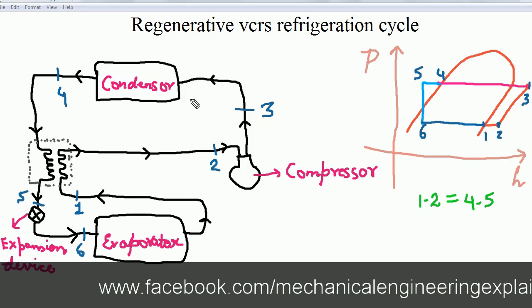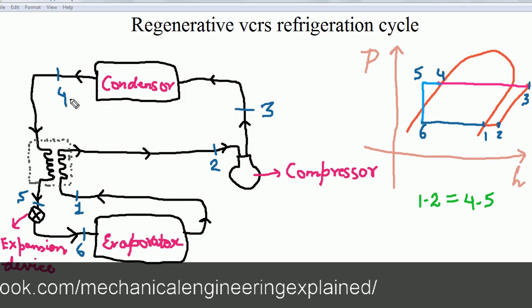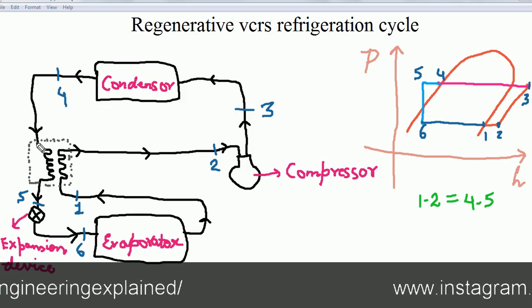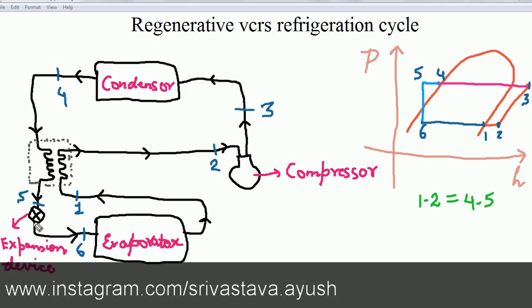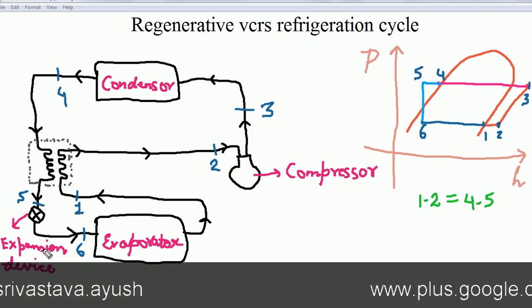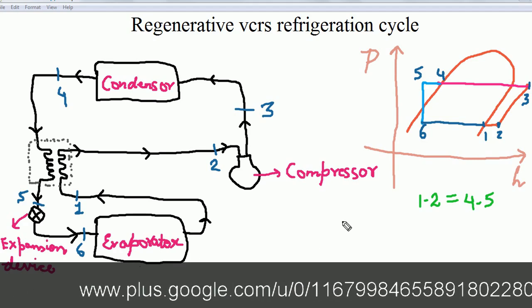the heat is rejected to the atmosphere in the condenser. From 4 to 5, the heat is rejected in the regenerator. From 5 to 6, the refrigerant is expanded in the expansion device or the capillary or the throttle device.